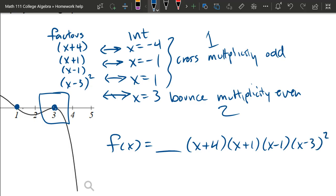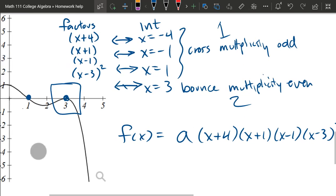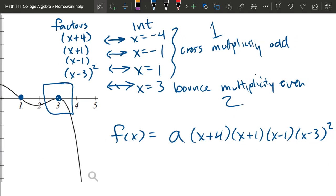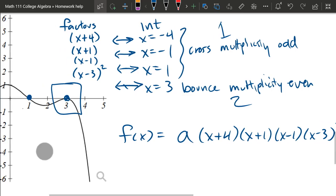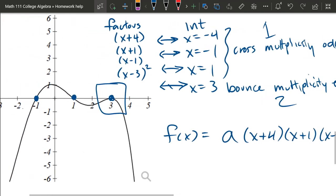These are all the factors that have a variable in them. There could also be a constant factor. I'm going to use the letter a. So how do we discover a?